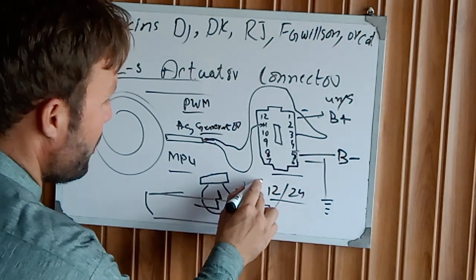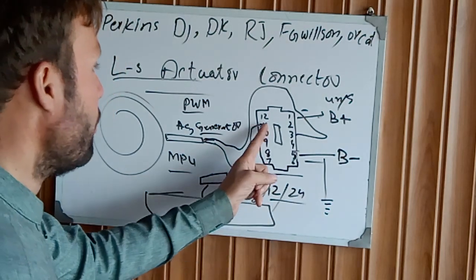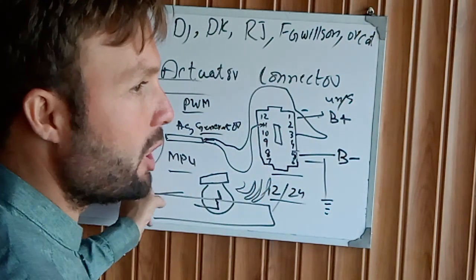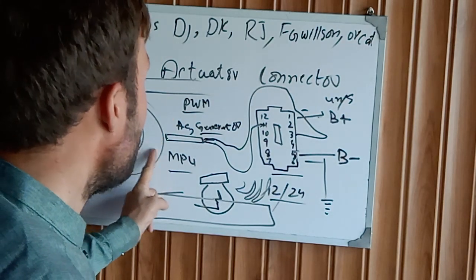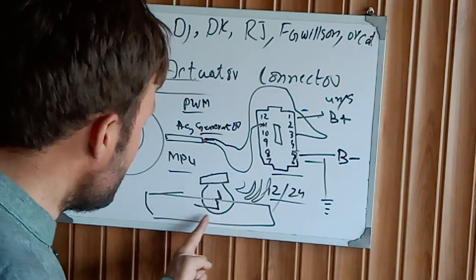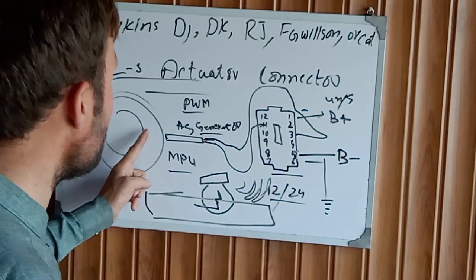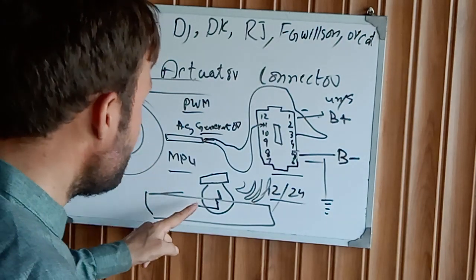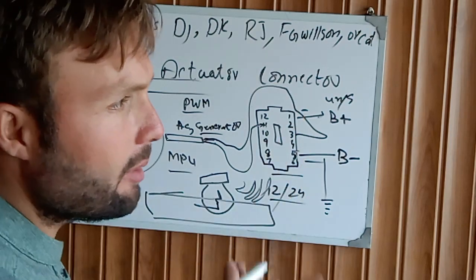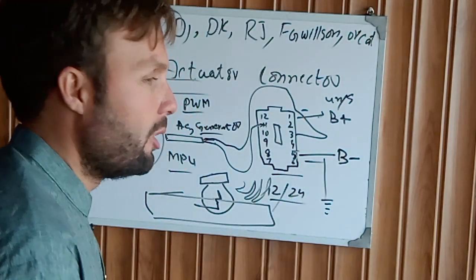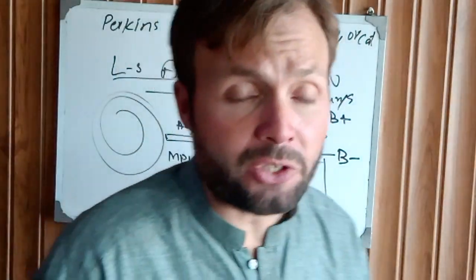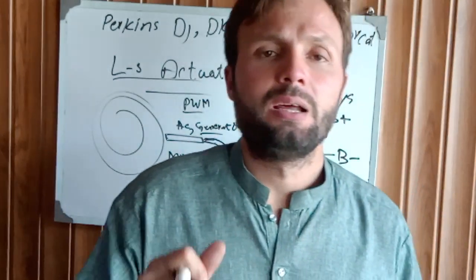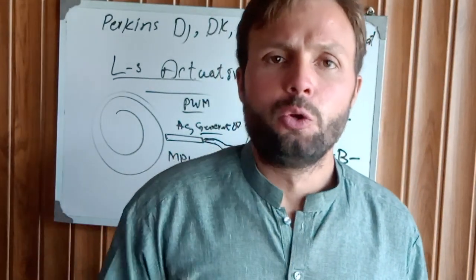This is connected with this link and the actuator moves back and forth, controlled by the MPU signal. When the MPU signal is increased, this decreases acceleration. When the MPU speed decreases, this increases. It works vice versa, opposite.